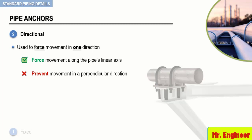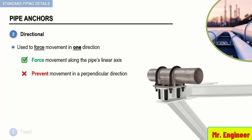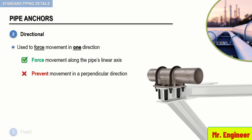The following figure depicts a typical example of a directional anchor. Keep in mind, directional anchors are often used to direct the movement of a pipe away from buildings, structures, or pieces of equipment.